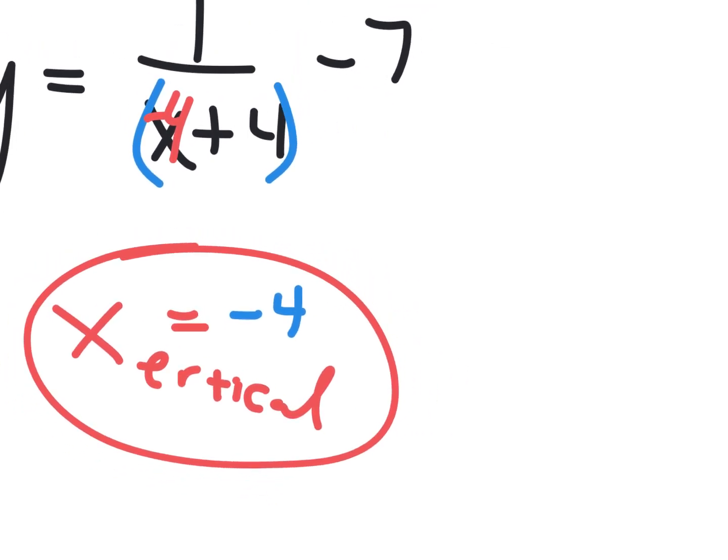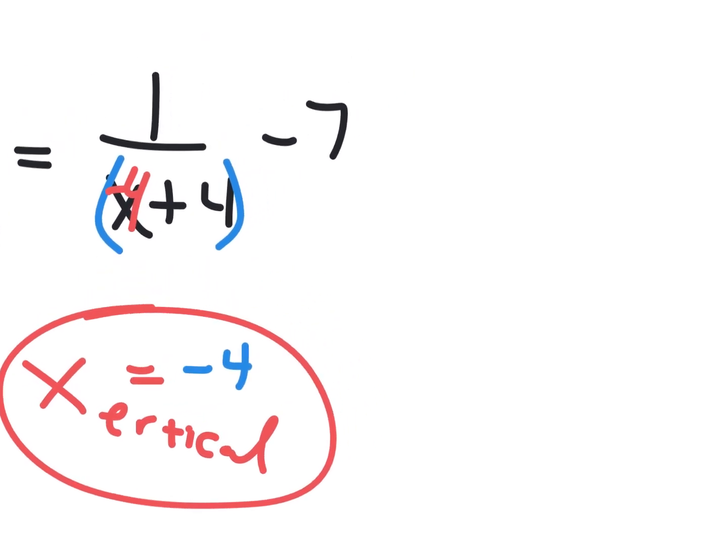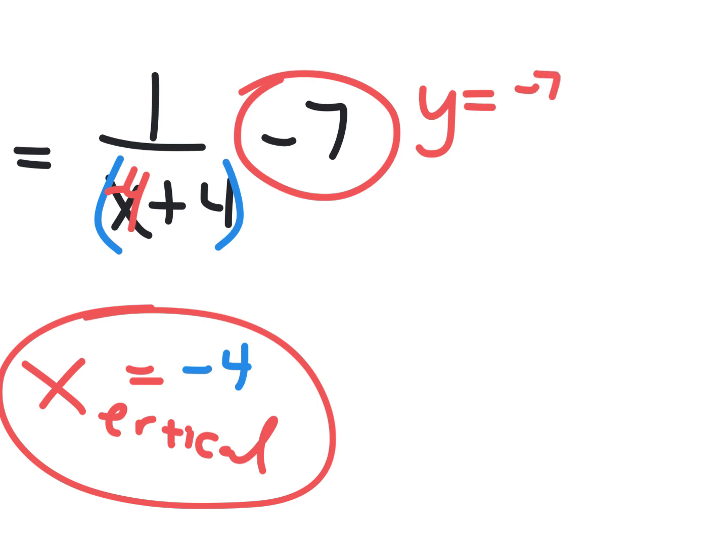You remember how you do the opposite of what's in there? Because if you put in a negative 4 there, watch what happens. I put in a negative 4, I get 0 on the bottom. You can't divide by 0. That's why x equals negative 4 is the vertical. You guys know which way vertical is? Do it with your hands. What's vertical? It's up and down like this.